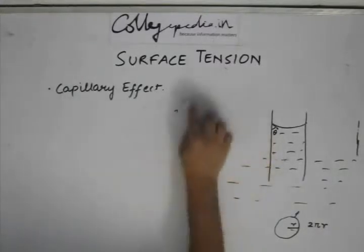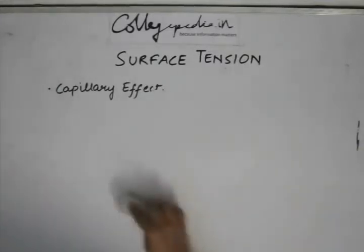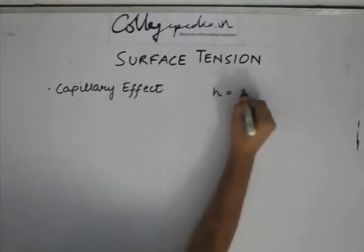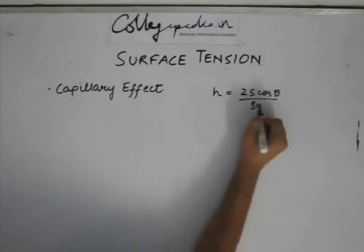Let us look at some questions that might arise if we change our setup a little bit. We found that h was equal to 2s cos theta by ρ g r.